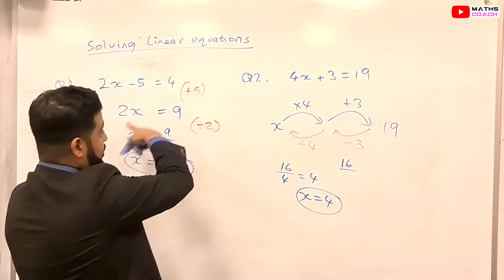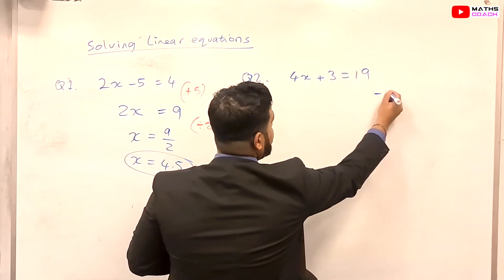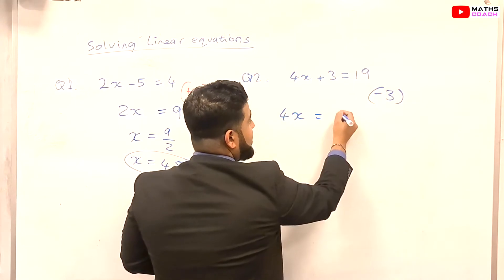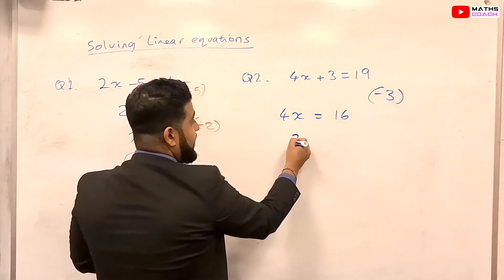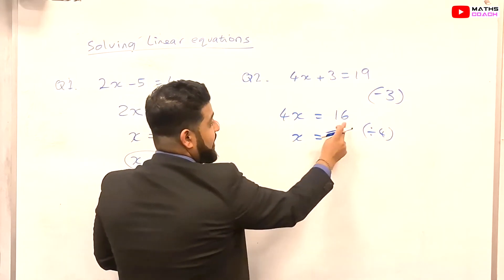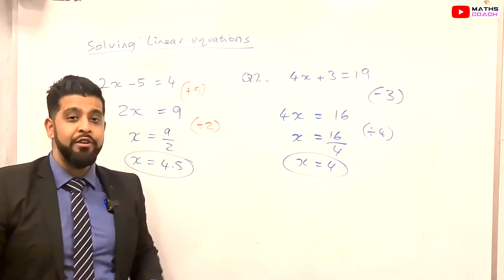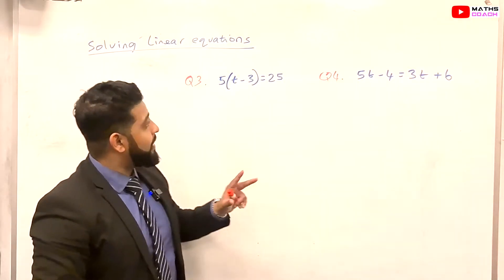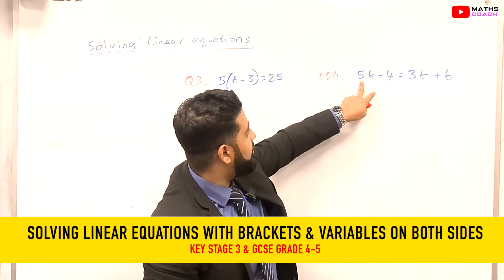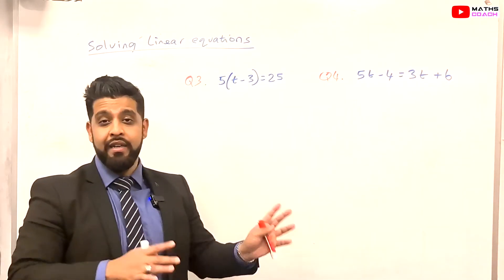I'll show you the conventional method one last time for 4x plus 3 equals 19. We minus 3 from both sides: the 3 disappears and 19 minus 3 gives us 16. Then we divide both sides by 4, and x is equal to 4. Now let's look at the questions on the board: 5 bracket t minus 3 equals 25, and 5t minus 4 equals 3t plus 6. Try them yourself. When you're ready, press play and I'll go through it with you.